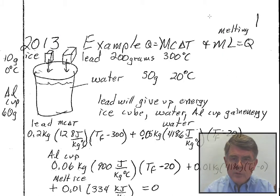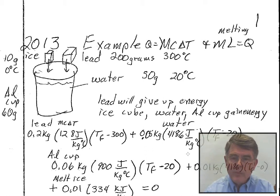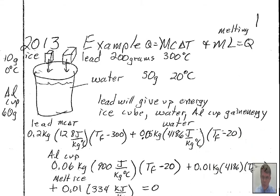This is a video describing calorimetry calculations where objects that have high temperature are going to give up energy and objects that have lower temperature are going to receive energy. In this situation we have an aluminum cup that is 60 grams of mass. Inside the cup there's 50 grams of water at 20 degrees Celsius. The aluminum cup is in thermal contact with the water, so the aluminum cup will also be at 20 degrees Celsius.